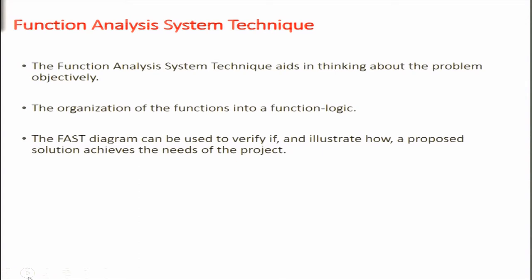Next is Function Analysis System Technique, also known as the FAST diagram. It aids in thinking about the problem objectively. The organization of functions into a function logic diagram can be used to verify and illustrate how a proposed solution achieves the needs of the project. We identify all functions and ensure none are missed — for a chair, nuts, bolts, and rivets have functions like 'provide joining,' 'provide fitment,' and 'secure movement.' These all need to be identified.